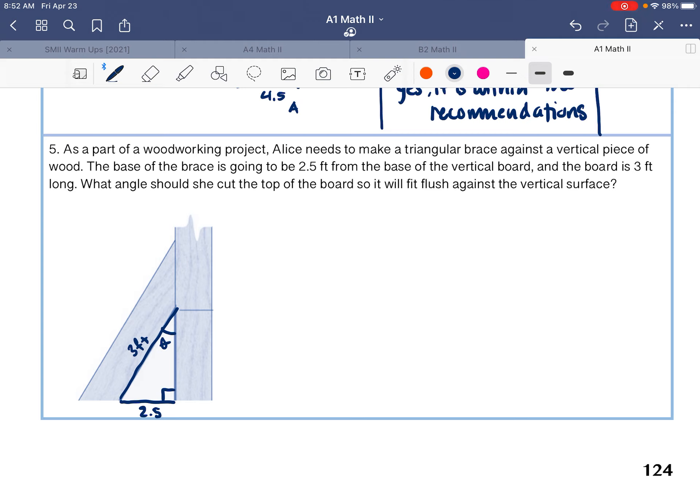And so from that angle, we have the opposite side and the hypotenuse there. So we have sine of theta is equal to two and a half over three. We take the sine inverse and we get two and a half over three and we get 56.44 degrees. So that's the angle she needs to cut the board in order for it to fit flush. So that's eight dash two. That's inverse trig functions. Let me know if you have any questions.